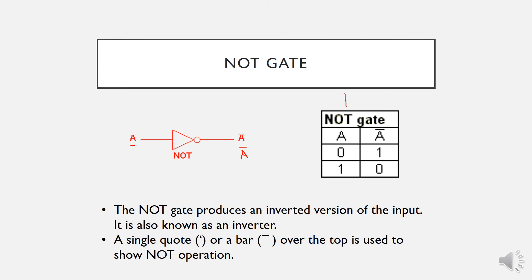The truth table is very simple: we have input one or zero, and the output is the inverse of the input. So if the input is zero, the output will be one.